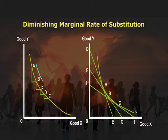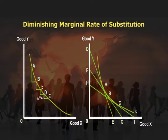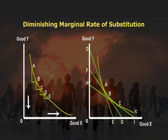As the consumer slides down along the curve, the length of delta Y becomes shorter and shorter while the length of delta X remains the same. Therefore, delta Y2 at point B is less than delta Y1 at point A, and similarly delta Y4 at point D is less than delta Y3 at point C. This states that as the consumer buys more of good X, the stock of good Y decreases, but he would forego less and less of good Y for a given increment in good X. In other words, the MRS xy falls as the consumer has more of good X and less of good Y.